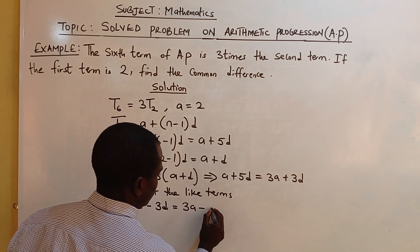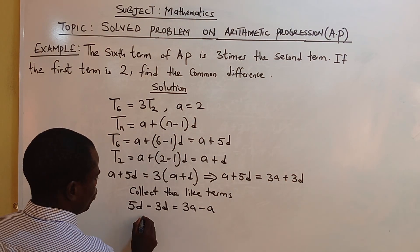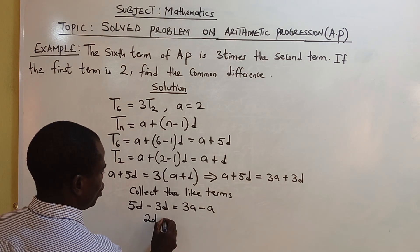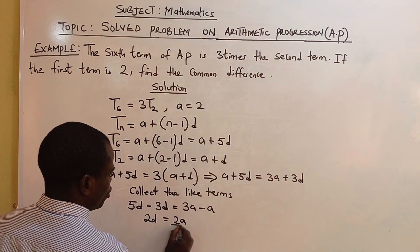We turn to negative when it moves to the other side, when it crosses this equals sign, minus A. We have 5D minus 3, that's 2D equals 2A, 2 times 2.